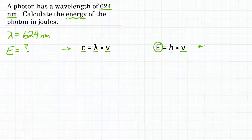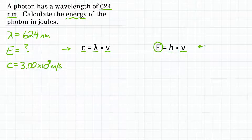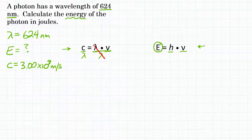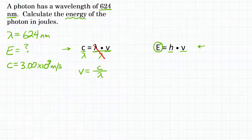For this first equation, we need c, the speed of light, which is 3.00 times 10 to the eighth meters per second. Now let's manipulate the equation to solve for frequency. To do that, we divide both sides by wavelength so that wavelength cancels on the right. We can rewrite this as frequency equals the speed of light divided by wavelength, and now we can plug in our values.